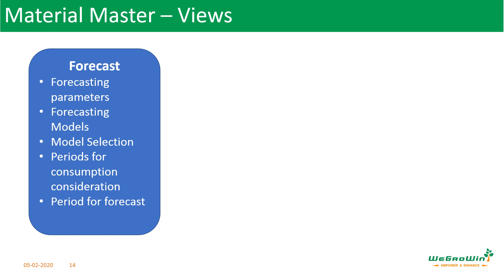The forecast view enables you to define what forecast parameters and model to use — such as a constant model, seasonal model, or moving average trend. If you know what the forecast set of properties is, you can select one of the models already available. The system also has the option of automatic model selection, where the system itself will suggest the model to be followed. You can inform the system how much historical data period to consider and how far ahead the forecast has to be projected. The forecast view is also useful for automatically calculating the reorder point and safety stock based on service level.